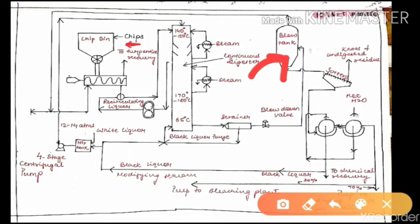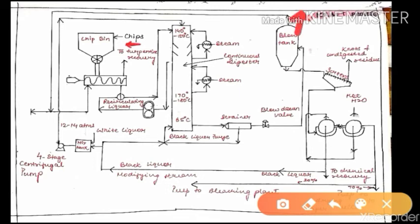In the blow tank, the produced pressure stream enters and the slurry is evaporated. Basically, steam is manufactured here and this steam serves as the basic power generation source for the entire mill. In the blow tank the pulp is concentrated and steam is taken out from the top.